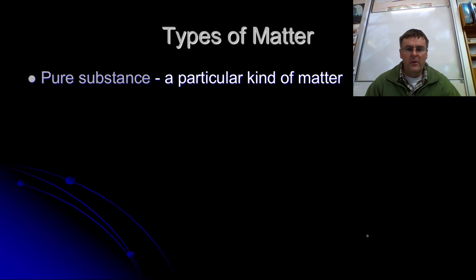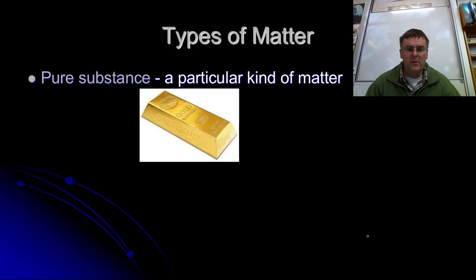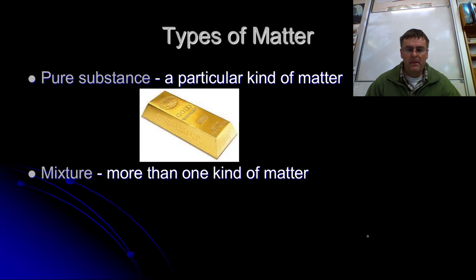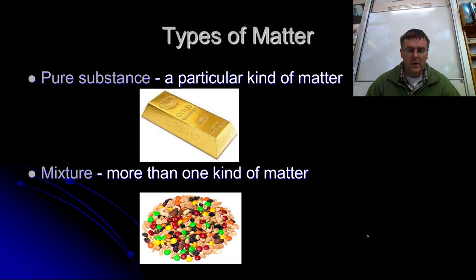Now, we've got pure stuff, that's only one kind of matter, so there's a bar of gold, wouldn't we love to have one of those in our bags, that's only one thing in there, so it's pure. Mixture, there's more than one kind of thing, and there's a mixture, that's what we here in New Zealand call scroggin, a bunch of yummy stuff to munch on when you're going tramping or hiking in the hills, in the mountains, in the bush. It gives you a bit of energy and keeps you going. It's a mixture of all sorts of yummy stuff put together.